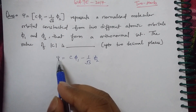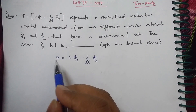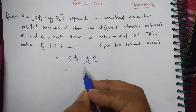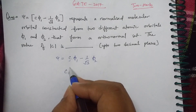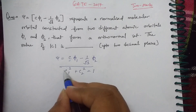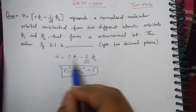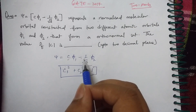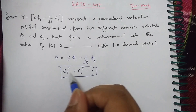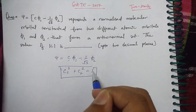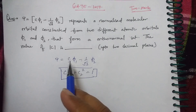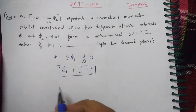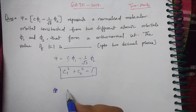This normalized molecular orbital will be normalized only if the sum of the squares of the coefficients of φ₁ and φ₂ equals 1. The normalization condition is c₁² + c₂² = 1. Here, c₁ = c and c₂ = −1/√3, so we write c² + (1/√3)² = 1.